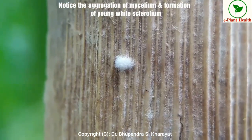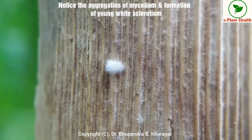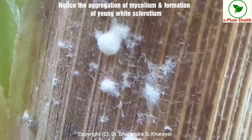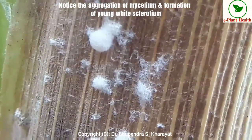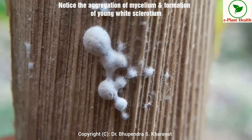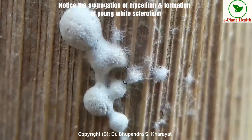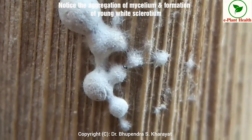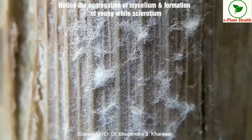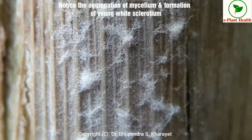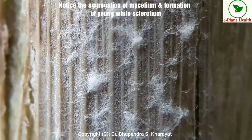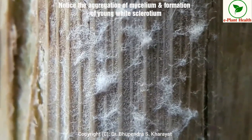This sclerotium is a compact mass of hardened fungal mycelium which contains reserve food material. It is formed by the aggregation of mycelium and it is a survival structure of Rhizoctonia solani under extreme environmental conditions.